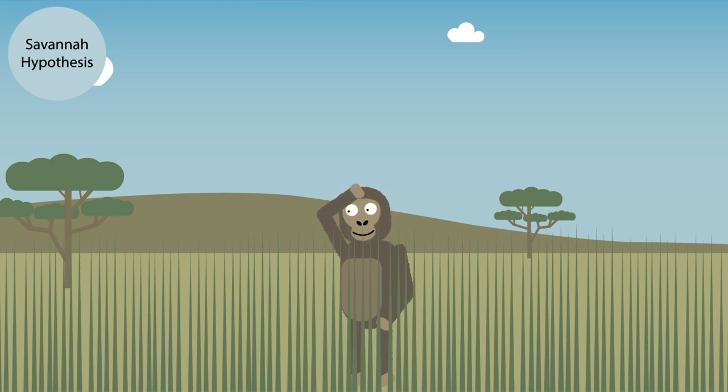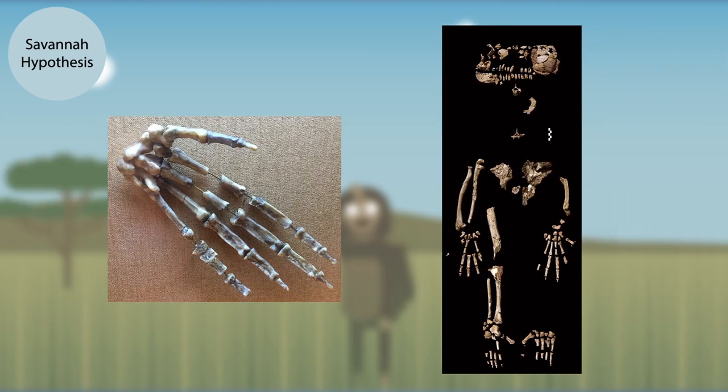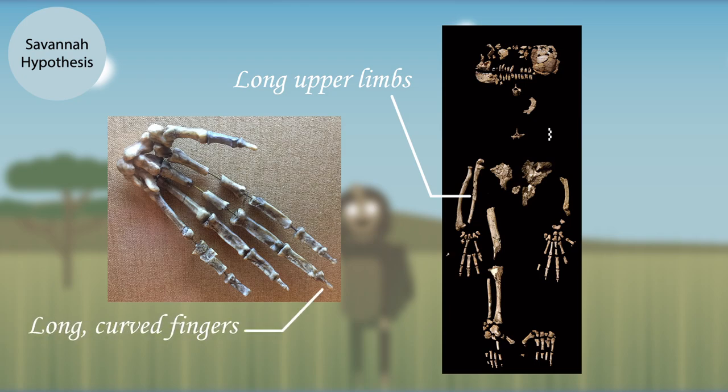This theory, however, has fallen out of favour in recent years as more fossil evidence has been discovered, showing that the early bipedal hominids were still adapted to climb in trees, which indicates that bipedalism likely evolved in trees.